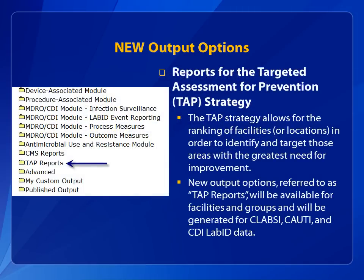A rate table displays the percent of all pathogens that tested resistant or non-susceptible to the applicable drug. New reports are built to align with the CDC's Targeted Assessment for Prevention, or TAP, strategy. The TAP strategy allows for the ranking of facilities or units within facilities in order to identify and target those areas with the greatest need for improvement. These new output options, referred to as TAP reports, are available for facilities and groups and generated for CLABSI, CAUTI, and FACWIDE-N CDI LabID data. Detailed documentation and training on how to interpret and use these reports will be available in early 2015.